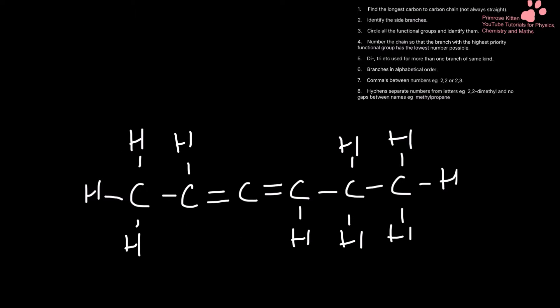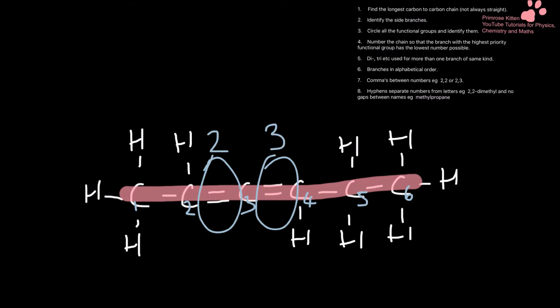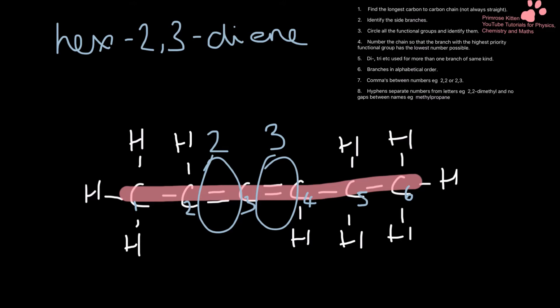Here we have one with two double bonds in it. Just going to highlight my longest chain again and circle my functional groups. Number it so I've got the lowest numbers possible: one, two, three, four, five, six. I've got a functional group on two and a functional group on three. I've got six carbons, so this is hex-2,3-diene — because I've got two double bonds, we use 'di' before 'ene'.